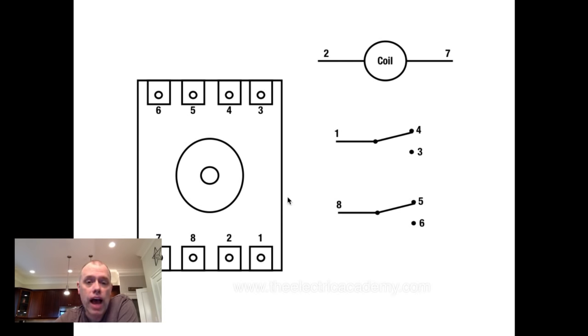I have two sets of contacts here. I've got one set. This number 1, we call that a common because power is coming in here. Now, power can either go from 1 to 4, which would be normally closed, or 1 to 3, which is normally open. So I have two sets of contacts here and one common.